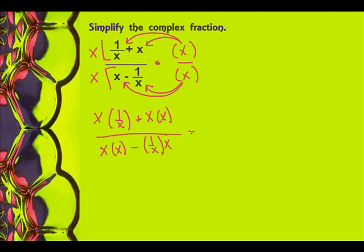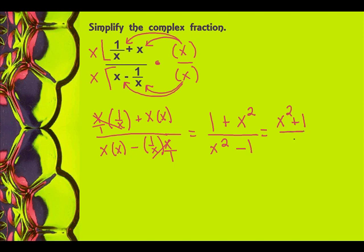So what I end up with is: this is over 1, so those cancel to leave me 1 plus x times x is x squared. Now in the denominator, x squared — but once again this is over 1, so those will cancel to leave me with a 1. So what I end up with is x squared plus 1 over x squared minus 1.